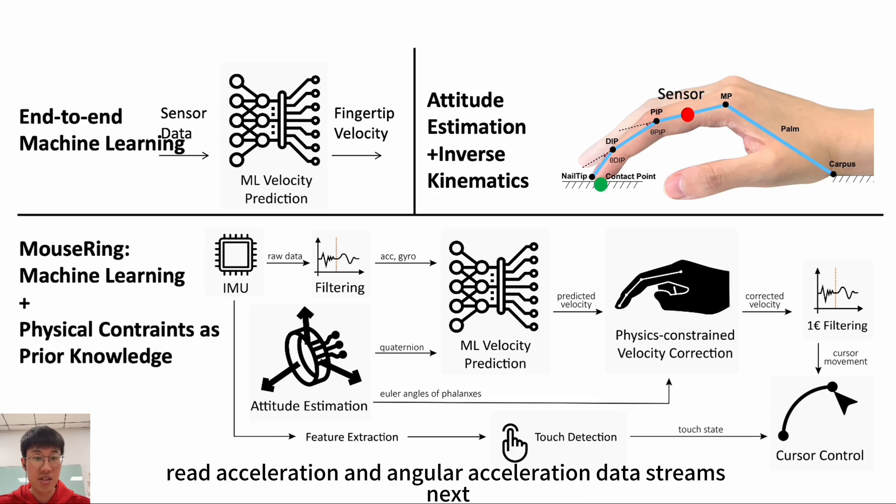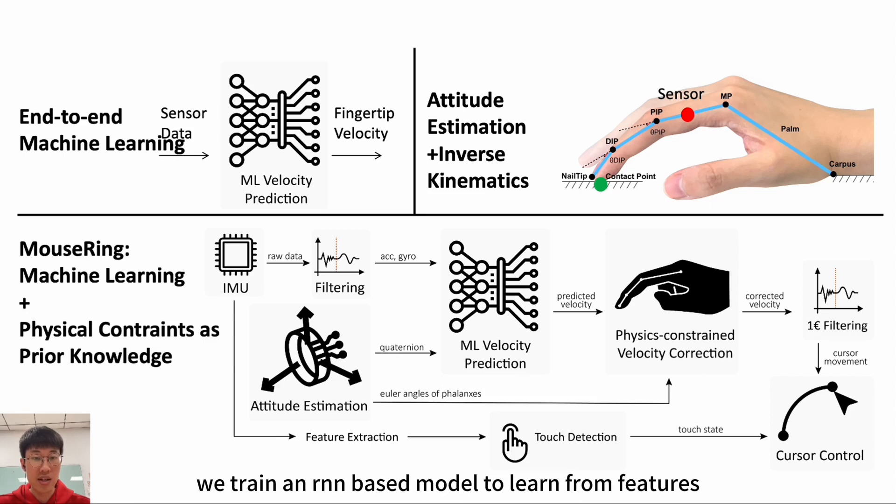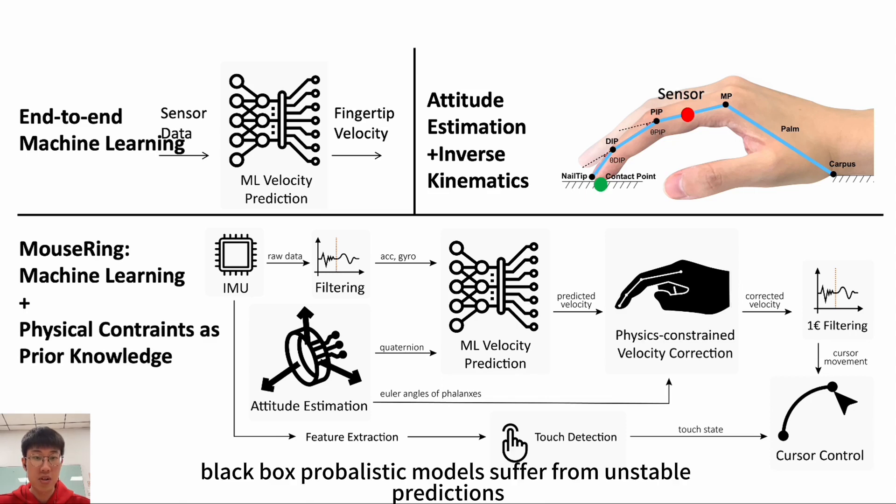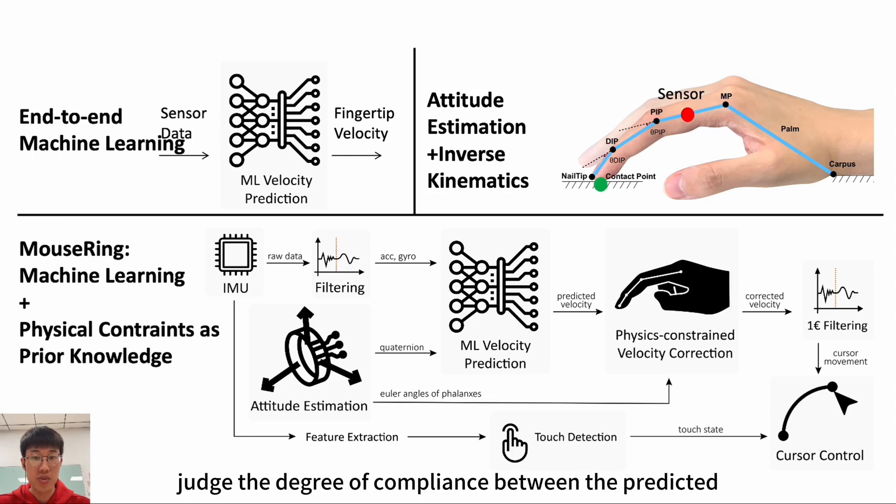We then estimate each bone's attitude by processing the continuously read acceleration and angular acceleration data streams. Next, we train an RNN-based model to learn from features such as finger skeleton attitudes and ring accelerations and to predict fingertip velocity. However, black box probabilistic models suffer from unstable predictions and poor interpretability. Therefore, we establish several physical constraints based on the attitudes and velocity, judge the degree of compliance between the predicted instantaneous velocities and physical constraints, and finally correct the velocity. In addition, we also implement touch state detection and cursor smoothing to achieve a complete mouse-like target selection interaction experience.